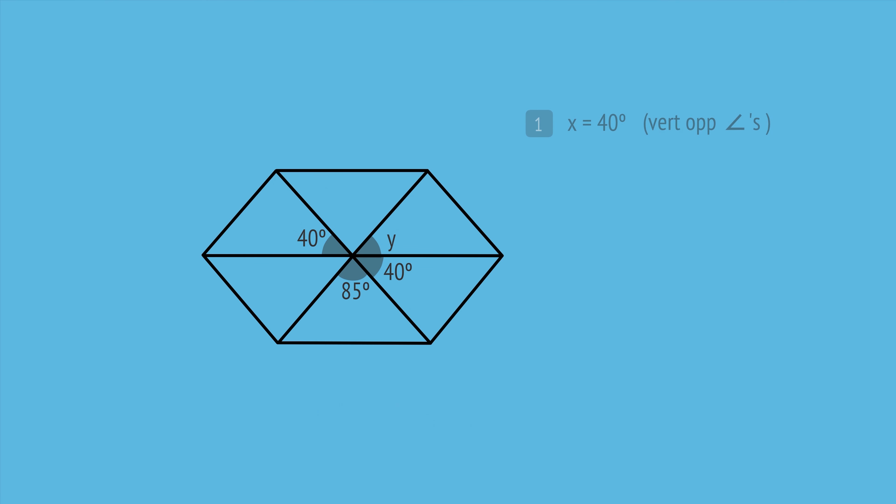Having found this angle, we can now calculate angle Y. Since the three angles form a straight line of 180 degrees, angle Y will be 180 minus 85 minus 40, or 55 degrees. And here's our working, showing the geometric reason we used at each step.